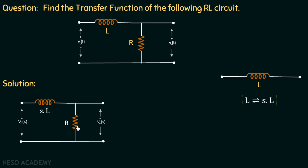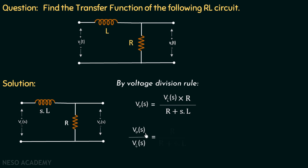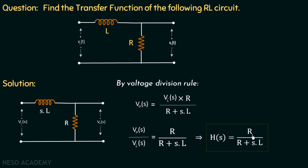In this circuit, the inductor and resistor are connected in series, because the same current flows through both elements and no current flows through the open-circuited branch. Since the elements are in series, voltage gets divided. We can find the output voltage using the voltage division rule: Vout(s) = V(s) × R / (R + SL). Transposing V(s) to the left-hand side, the transfer function Vout(s)/V(s) = R / (R + SL). This is the transfer function for this RL circuit.